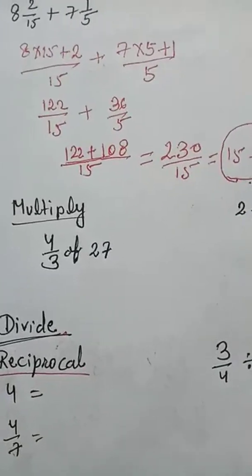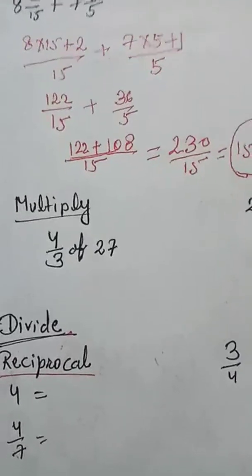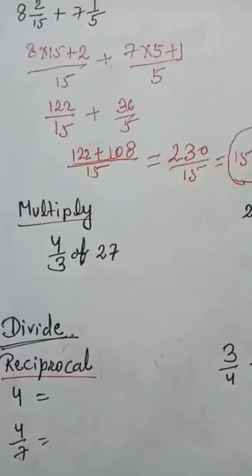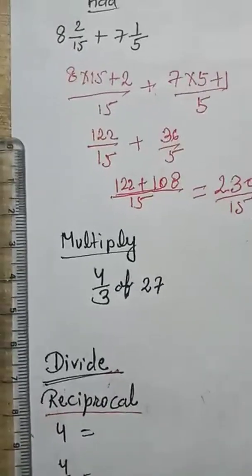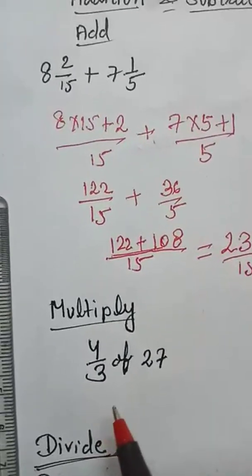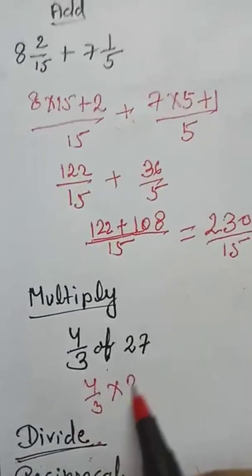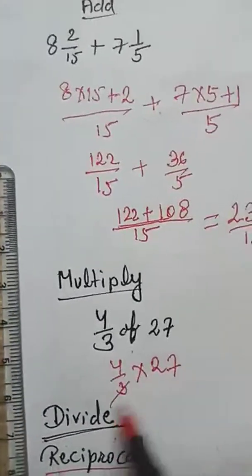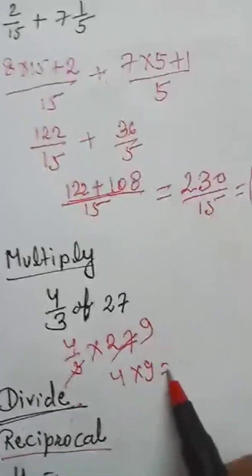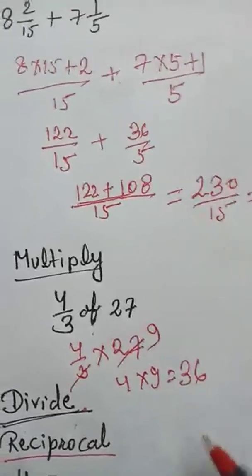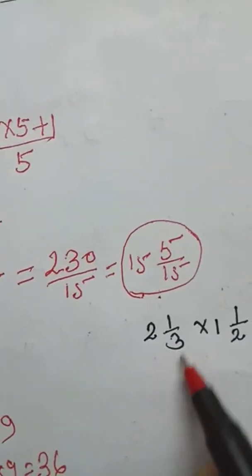In multiplication, as given in the previous video, 'of' means multiply. So 4 upon 3 of 27 means 4 upon 3 multiply 27. The 3 and 9 cancel, so 4 multiply 9 is equal to 36.